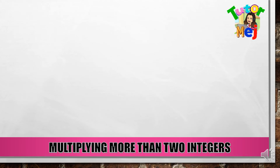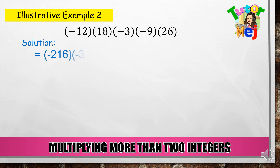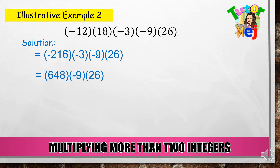Paano naman kung tayo ay magmumultiply ng more than 2 integers? Gawa tayo ng example: negative 12 times positive 18 times negative 3 times negative 9 times positive 26. Una, imultiply muna natin yung unang dalawang integers, tapos idugtong natin yung natitira pa. So negative 12 times positive 18 gives negative 216. Negative 216 times negative 3 — gawin ulit natin yung proseso — gives positive 648. So: positive 648 times negative 9 times positive 26.